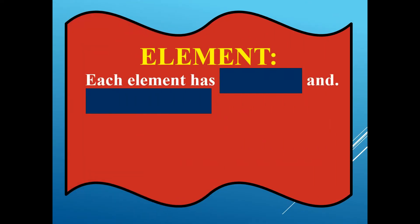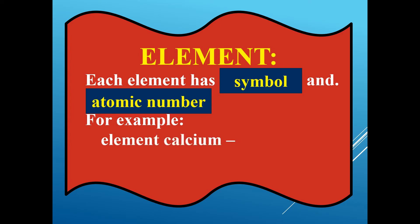Each element has a symbol and atomic number. For example, element calcium has the symbol Ca with an atomic number of 20. Element iron has the symbol Fe and the atomic number is 26.